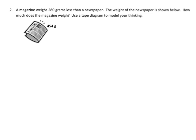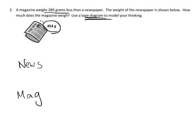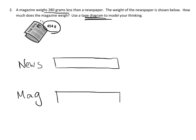Our last example: a magazine weighs 280 grams less than a newspaper, and the weight of the newspaper is shown—how much does the magazine weigh? We're going to use a tape diagram to model our thinking. There's no one magic tape diagram; here's one approach. We've got the newspaper and the magazine as our two subjects, and I'm drawing two bars of the same length, labeling them with their names.